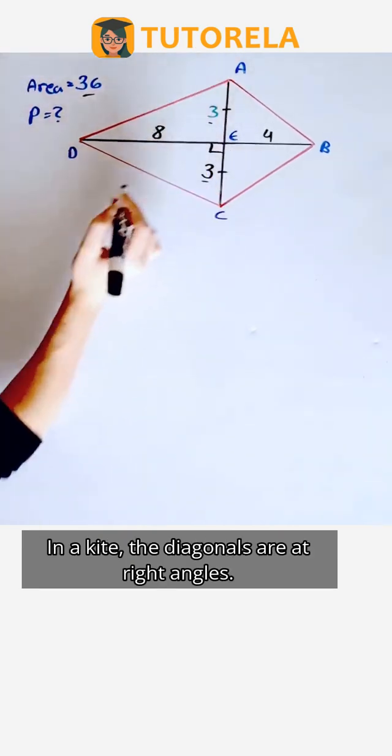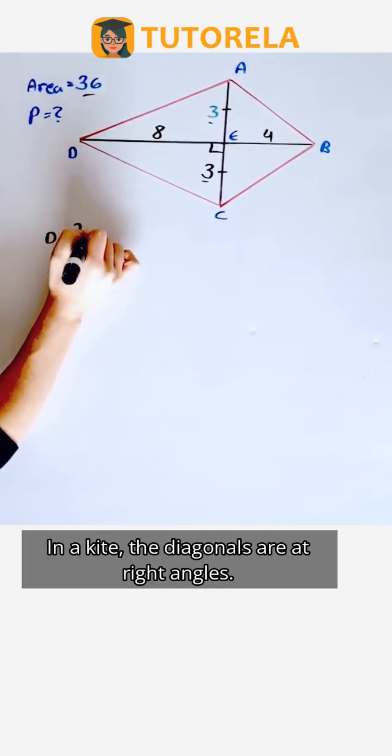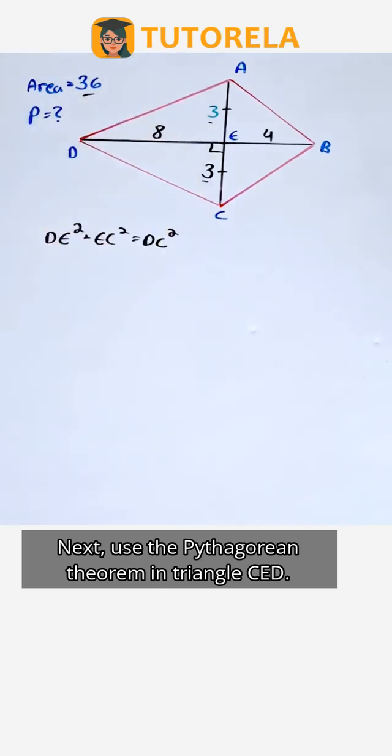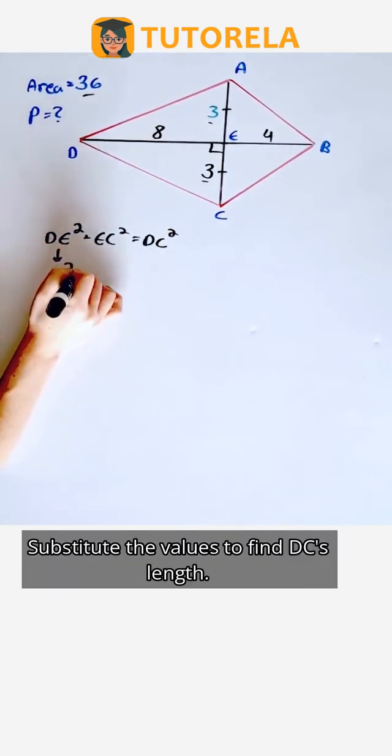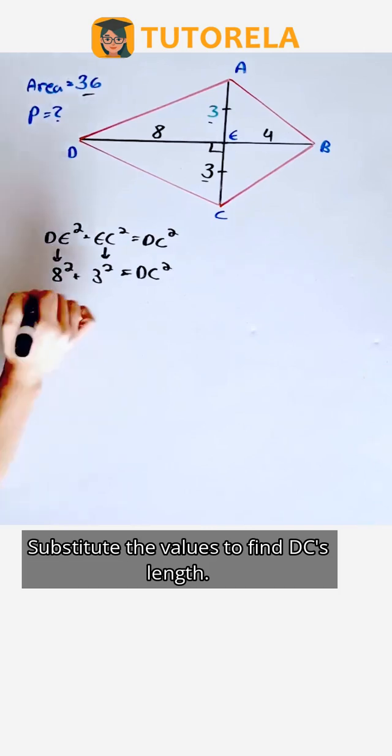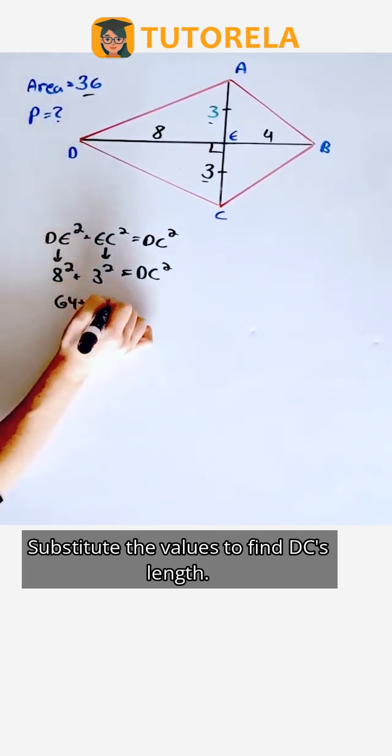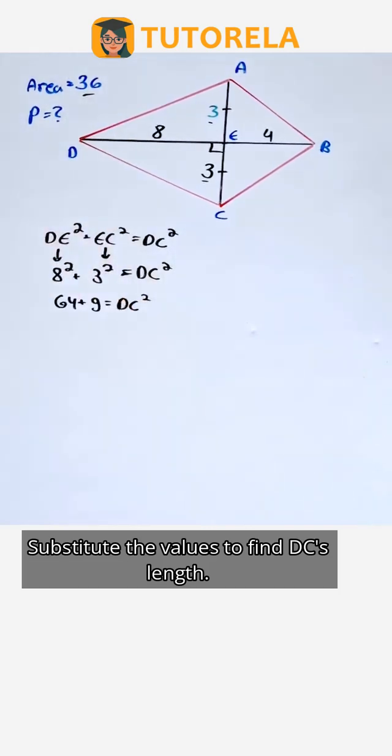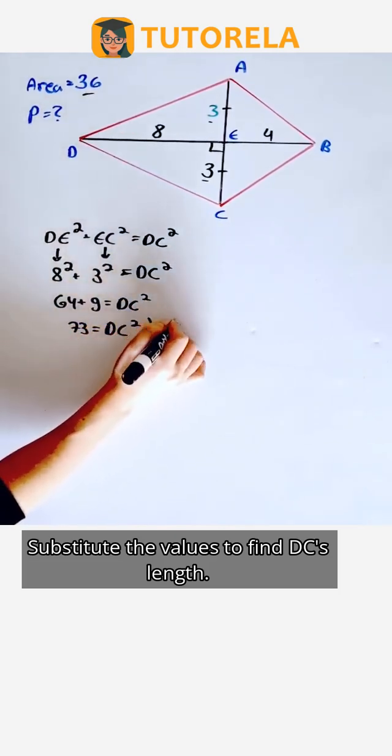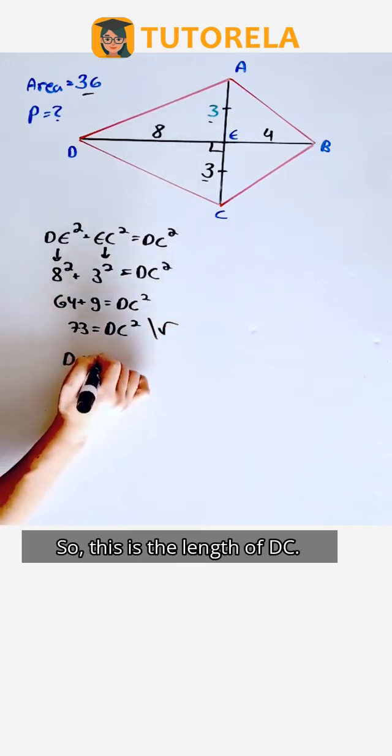In a kite, the diagonals are at right angles. Next, use the Pythagorean theorem in triangle CED. Substitute the values to find DC's length. So this is the length of DC.